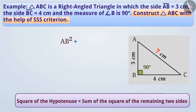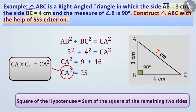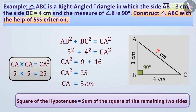Hence, AB² + BC² = CA². In the question, it is given that AB is equal to 3 cm and BC is equal to 4 cm. Therefore, 3² + 4² = CA². CA² = 9 + 16. CA² = 25. CA × CA = 25, so we need a number which, when multiplied by itself, gives 25. Such a number is 5, because 5 × 5 = 25. That is, CA is equal to 5 cm.